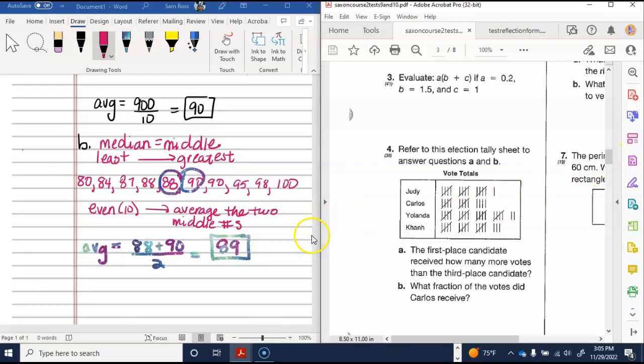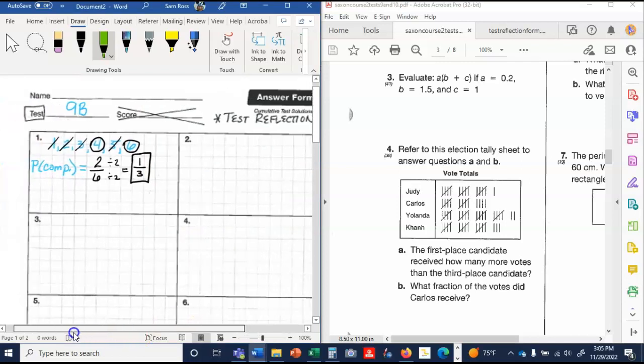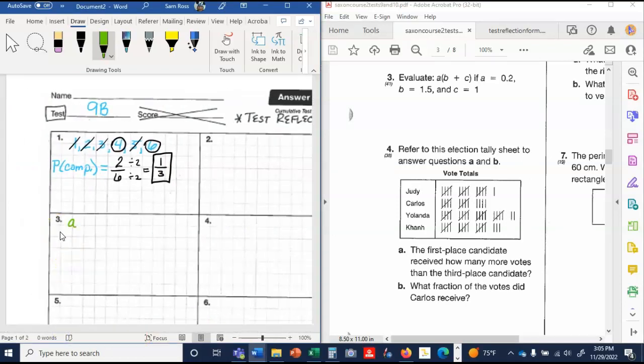So let's do number 3. Several people missed this one as well. Number 3 says evaluate A times B plus C. Evaluate means to plug in the numbers and work it out pretty much. So A is 0.2 times B, which is 1.5 plus 1. I'm going to do what's in parentheses first. So that equals 0.2 times 2.5. I'm going to go ahead and plug that into my calculator. 2.5 times 0.2. And I get 0.5. Got lots of different fun answers on this one. Please write all of that down if you got it wrong.